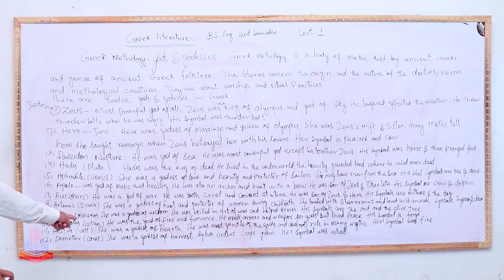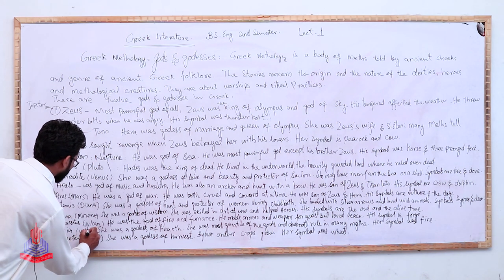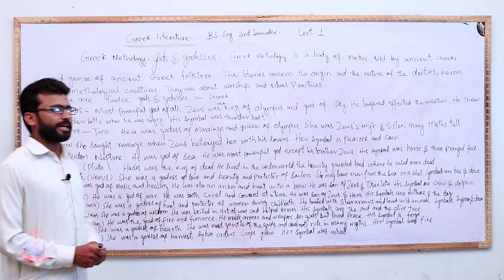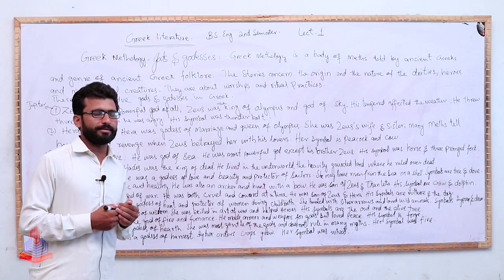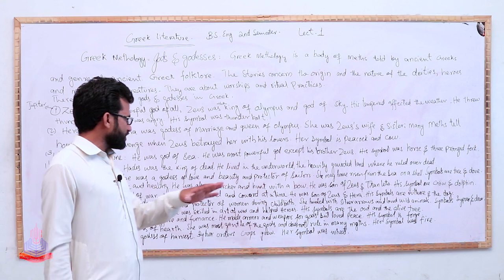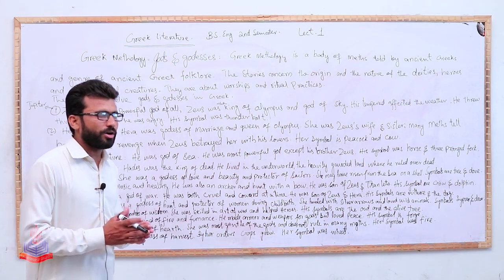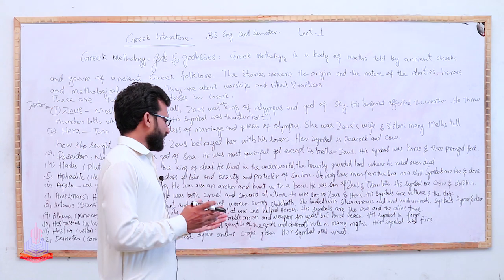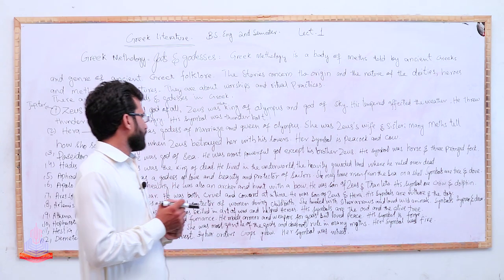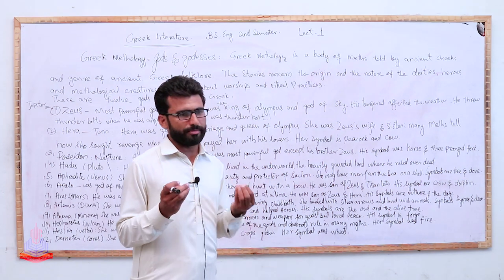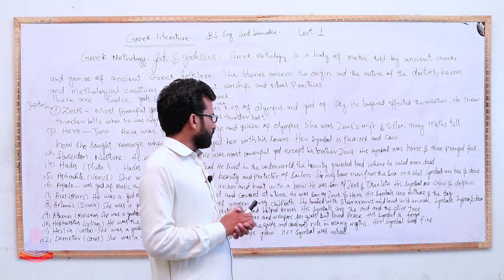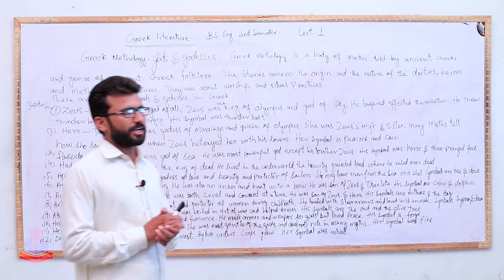Hestia. Vesta they call it in Roman. She was goddess of hearth. Hearth means the fire place in the house where cooking is done. She was the goddess of hearth. She was most gentle of gods, the most gentle among all the gods, the most gentle goddess. And does not rule in many myths - in many Greek myths she has no role. Her symbol was fire.